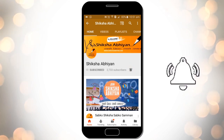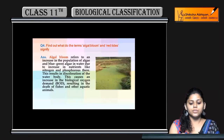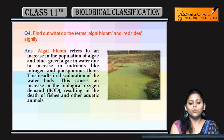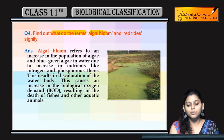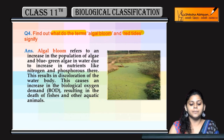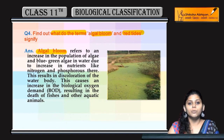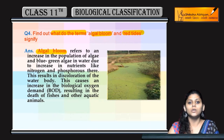The next question is: find out what the terms 'algal bloom' and 'red tides' signify. Talking about algal bloom — from the name itself, we know it's about algae. 'Bloom' means the excessive growth of something. When algae grow excessively in water bodies, that is called an algal bloom.